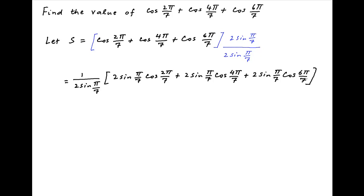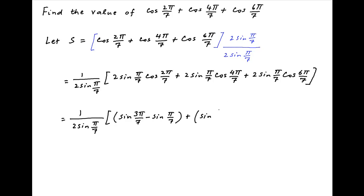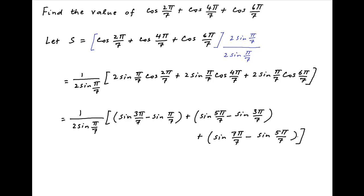The first term inside the brackets can be rewritten as sin(3π/7) minus sin(π/7), using the identity 2sinA·cosB = sin(A+B) - sin(A-B). Similarly, the second term becomes sin(5π/7) minus sin(3π/7), and the last term becomes sin(7π/7) minus sin(5π/7).